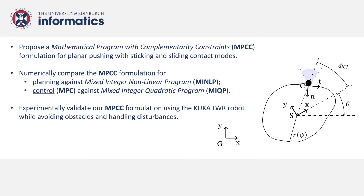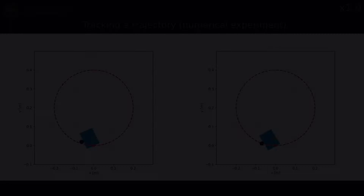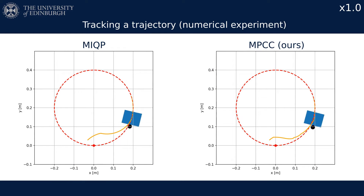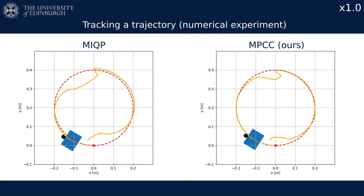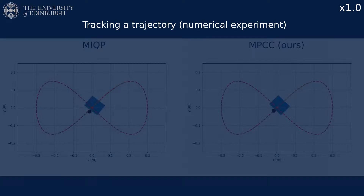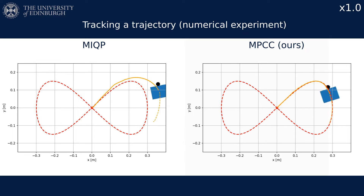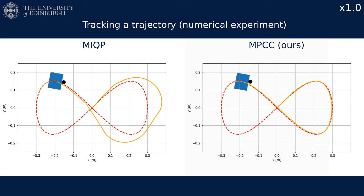We compare it numerically against the alternative mixed integer approaches and validate it experimentally. The MPCC approach achieves improved tracking in the presence of initial condition offsets and external disturbances, as well as more stable computation times. It also achieves improved tracking for more challenging nominal trajectories.